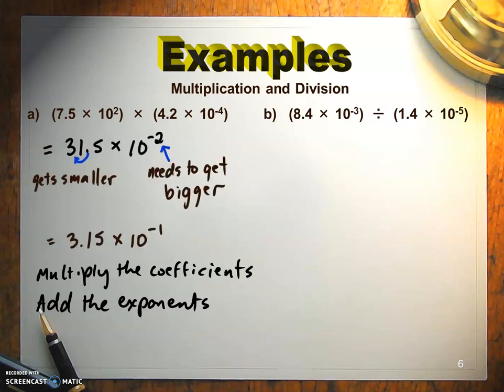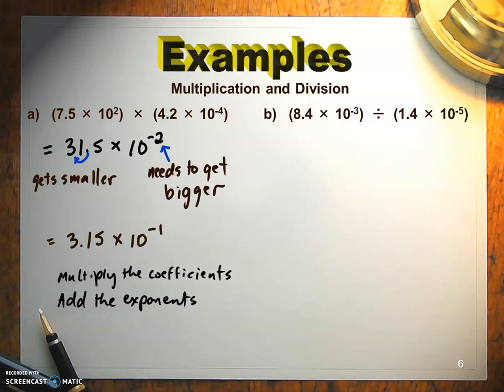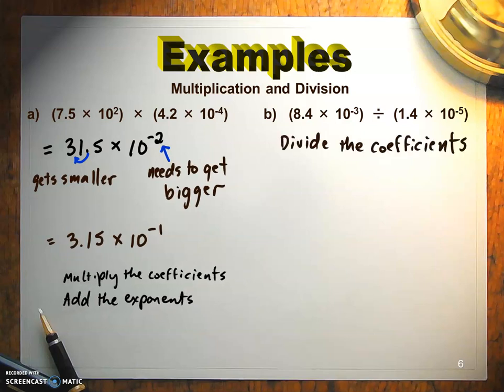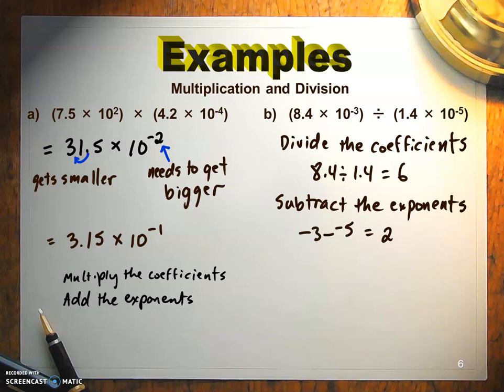When I go to do the division, you've just got to remember that the coefficients here are going to get divided, obviously. And the exponents are going to get subtracted. So you divide this, and by the way, in most cases, the division is going to work out evenly. You subtract the exponents, you're going to get positive 2. Watch out for that double negative when you go to subtract. So 6 times 10 to the 2. This answer is in scientific notation, no extra steps required.